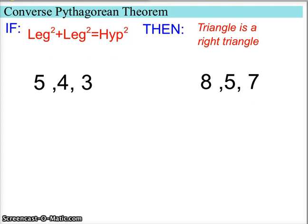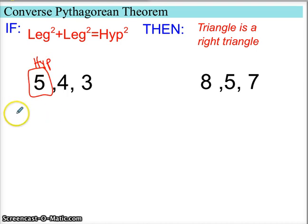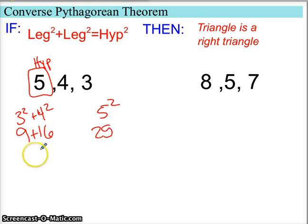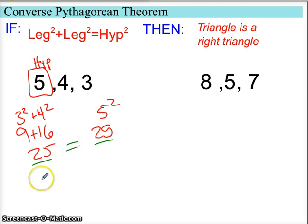Sometimes you're not given a picture. In that case, just make sure the longest side is in the hypotenuse position. Here we have 3 squared plus 4 squared compared to 5 squared. We get 9 plus 16 on one side, and 25 on the other. 9 plus 16 is 25 — the two values are equal. So yes, this is a right triangle.